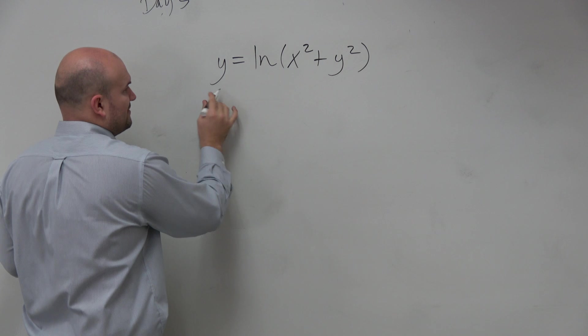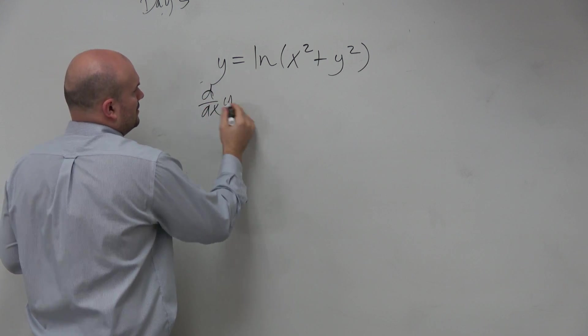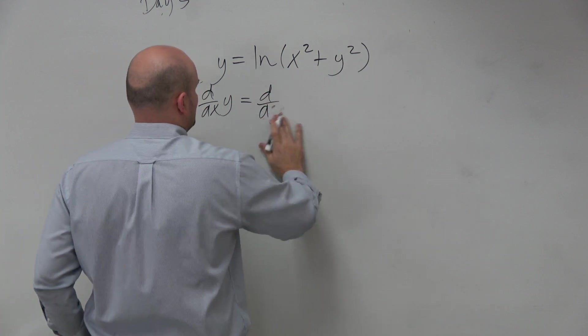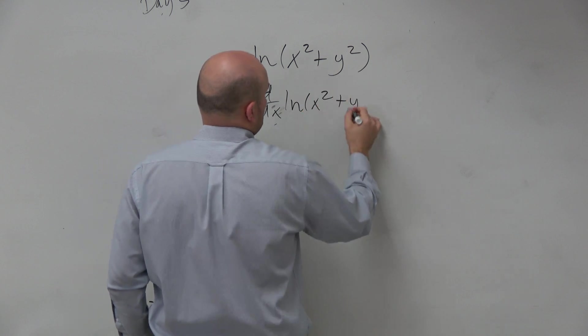So if I'm going to take the derivative here with respect to x of y, and d over dx is going to be ln of x squared plus y squared.